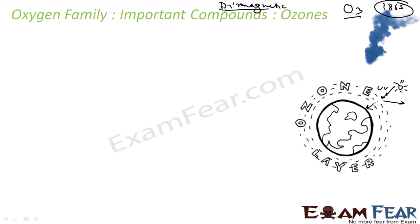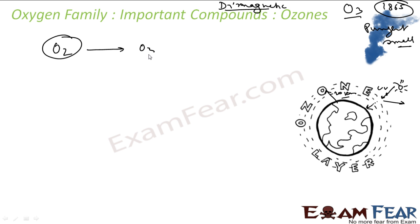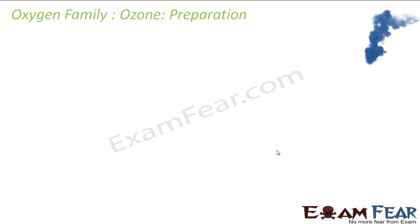Ozone is a pale blue gas with a very pungent, bad smell. It is created at a height of about 20 kilometers above the Earth. It is formed from atmospheric oxygen in the presence of sunlight at higher altitudes of 20 kilometers or more. This ozone layer forms a protective shield against excess concentration of UV rays, which are very powerful radiation. Now let's see how to prepare ozone.